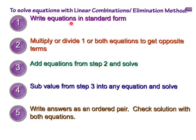Step one: write both equations in standard form. Step two: multiply one or both equations to get opposite terms — this is key in the elimination method. Step three: add your two equations from step one and solve. Step four: substitute the value you got from step three into any equation and solve. Step five: write both answers as an ordered pair. You can check your solutions with both equations algebraically.